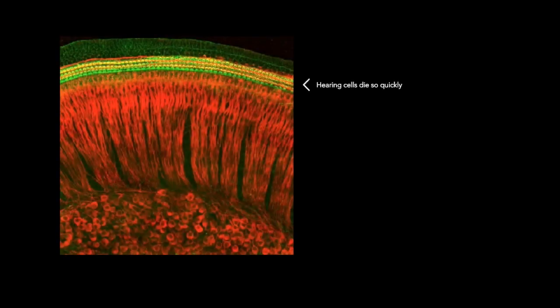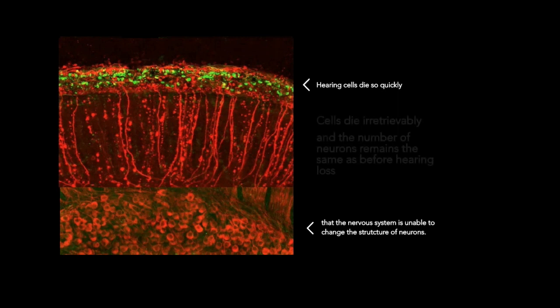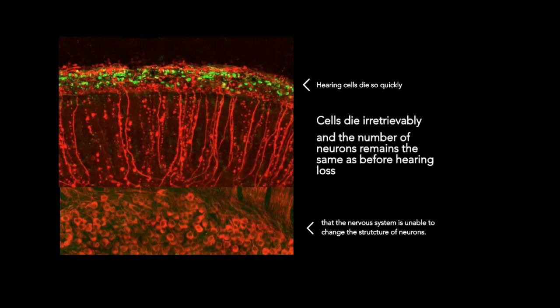However, if hair cells that would normally die over months die in one second, we are dealing with a kind of phantom pain, where one structure dies so quickly that it leaves no time for changes in the other structure, resulting in no change in the structure of neurons despite the fact that the hearing hair cells have been permanently and violently destroyed.